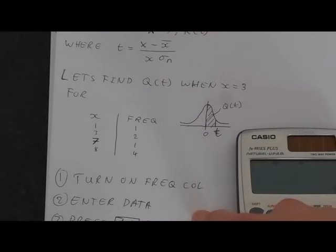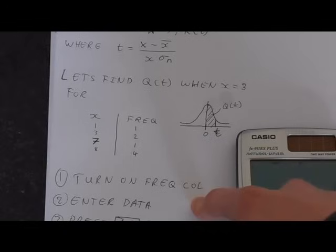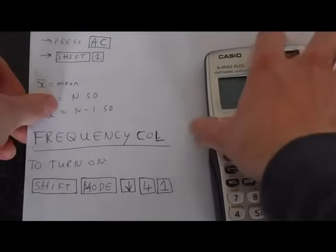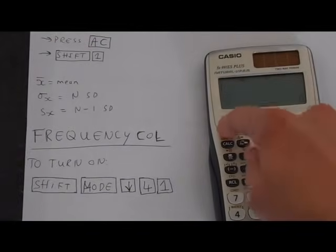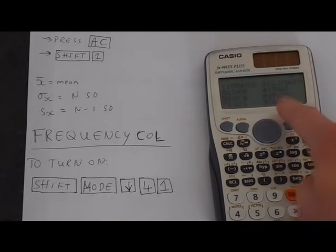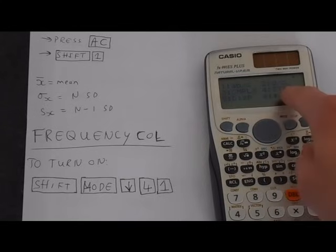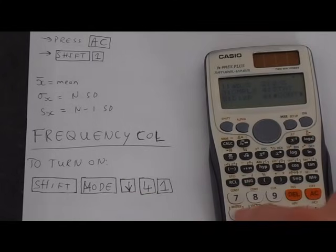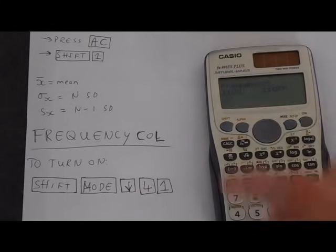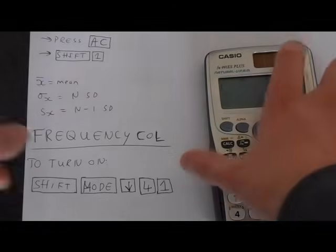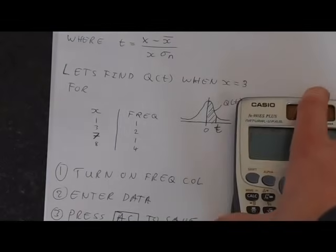First thing we have to do is turn on the frequency column. We had a set of instructions on how to do that back here. We're going to shift mode. That takes us into the setup menu. Then we're going to go down to the next menu. We want 4, which is stat, and then frequency, and that's got the frequency column on. That's the first step.